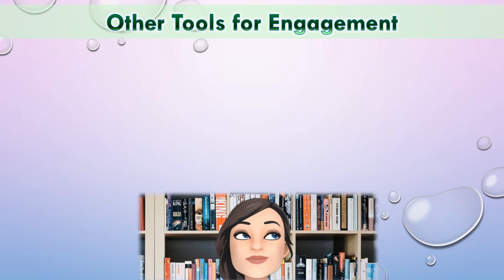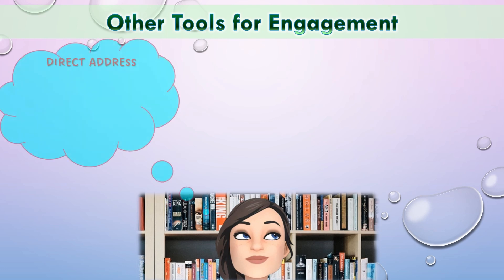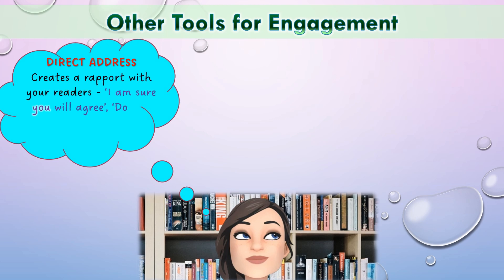There are lots of ways to keep your reader engaged. Direct address, as I've said, creates a rapport — a good relationship — with your readers. Some examples: 'I am sure you will agree,' 'Do you think that?' 'We are all in this together.' When I say the word 'you,' it sounds like I'm talking directly to you as a reader, making you become involved in the text. And words like 'we,' 'us,' 'our' make it seem like I'm just like you — the same person — so you can trust in what I'm saying.